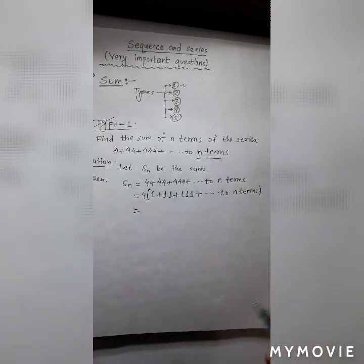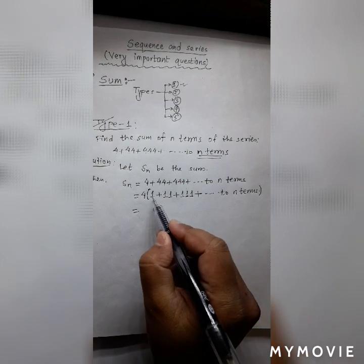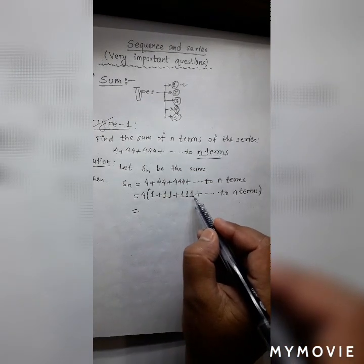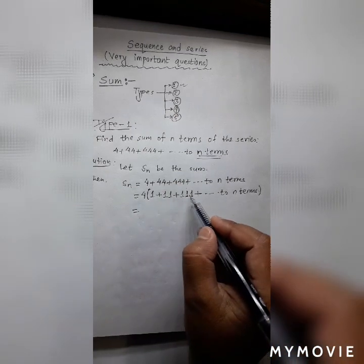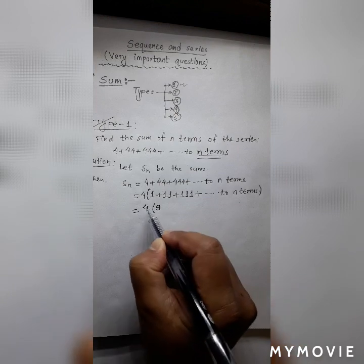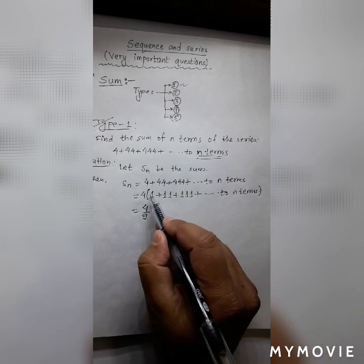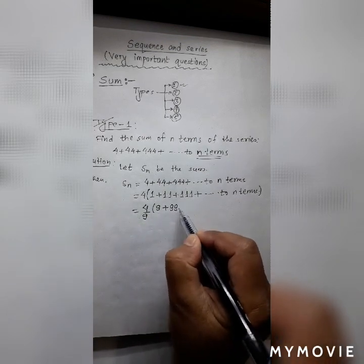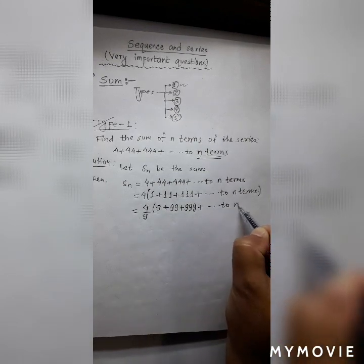After making all digits ones, we need to convert all the digits into nines. So how do we make them 9, 99, 999? If we multiply all the numbers by 9, then we get 9, 99, 999 and so on. But to multiply by 9, we also need to divide by 9. So we have: 9 times 1 = 9, 9 times 11 = 99, 9 times 111 = 999, and this goes to n terms.